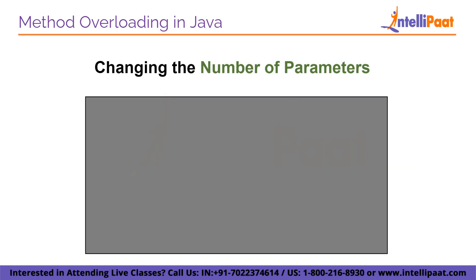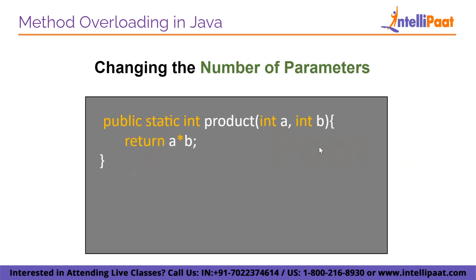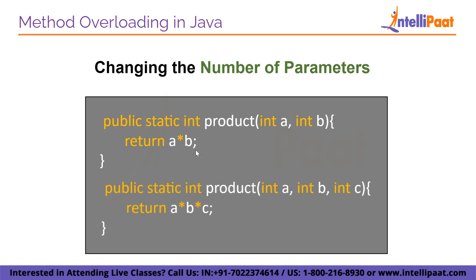Let's understand this with an example. Suppose you want to find the product of two numbers, a and b. We declare a method named 'product', passing two integers a and b, and returning their product. Similarly, if you want the product of three integers a, b, and c, we can use the same method name 'product' but pass three integers and return a times b times c. This is method overloading by changing the number of parameters.